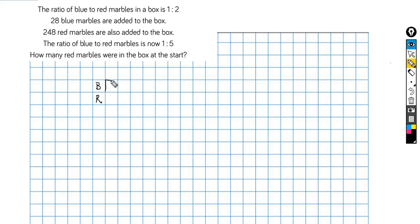I'm going to draw one block to represent the number of blue marbles originally in the box, and there'll be two blocks to represent the number of red marbles. I hope you can see that represents this ratio here of 1 to 2. There are two times as many red marbles as blue.